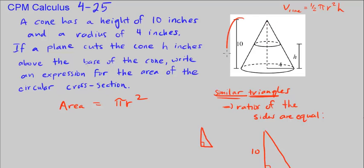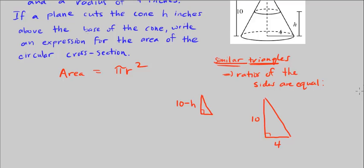Well, we know this is just the total 10 minus h, so this is 10 minus h. And we don't know this side, let's just call it r, because r is this length.